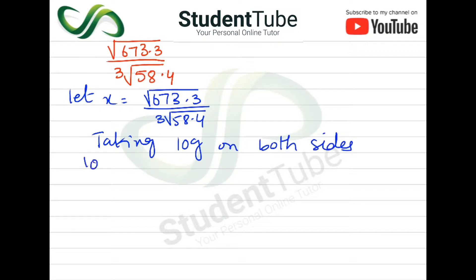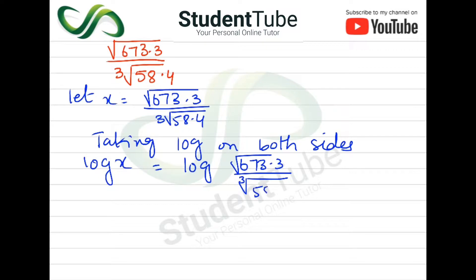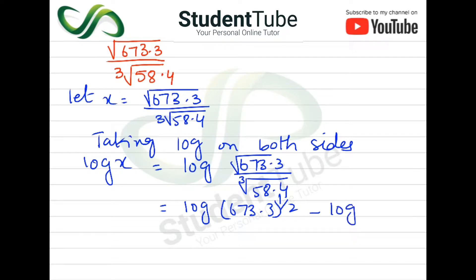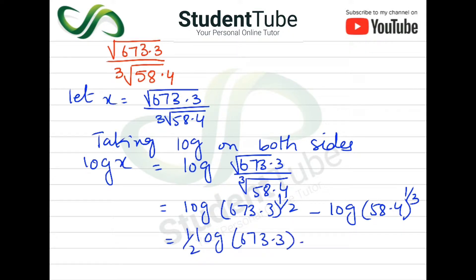So this will be: log x = log(673.3 / ∛58.4). Now we apply log rules — the square root gives 1/2, minus log of 58.4 with the cube root giving 1/3. So: log x = (1/2) log 673.3 − (1/3) log 58.4.